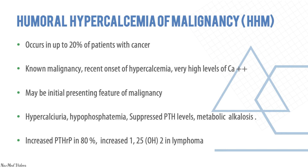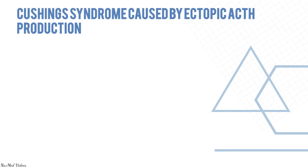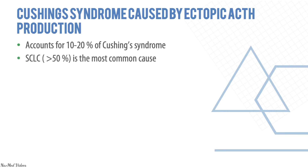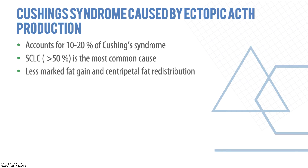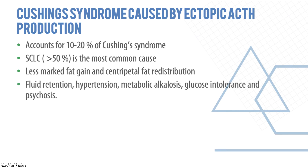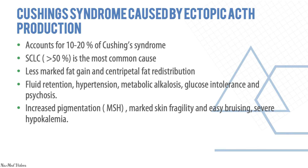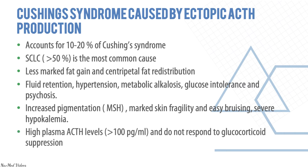There is increased PTHrP in 80% of cases and increased 1,25-dihydroxy vitamin D in lymphomas. Cushing's syndrome caused by ectopic ACTH production accounts for 10–20% of Cushing's syndrome cases. Squamous cell lung carcinoma is the most common cause. There is less marked fat gain and centripetal redistribution compared to typical Cushing's. Features include fluid retention, hypertension, metabolic alkalosis, glucose intolerance, psychosis, increased pigmentation, skin fragility, easy bruising, and severe hypokalemia. ACTH levels are high and do not respond to glucocorticoid suppression.